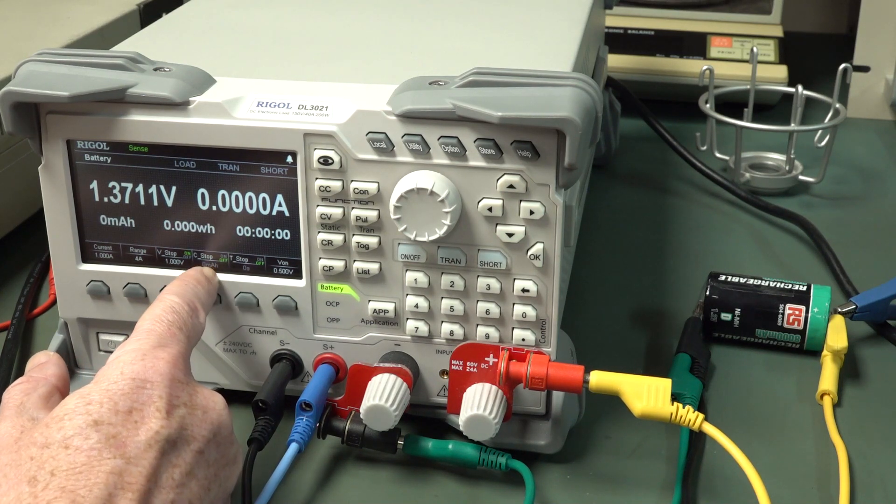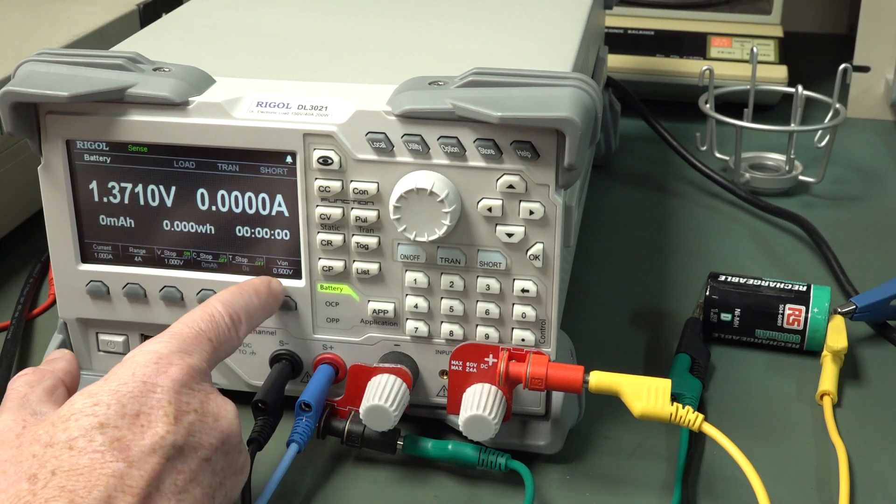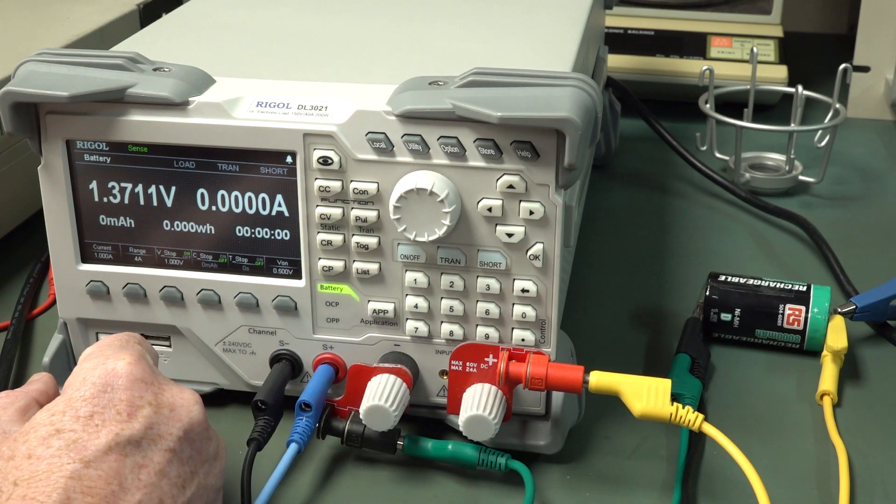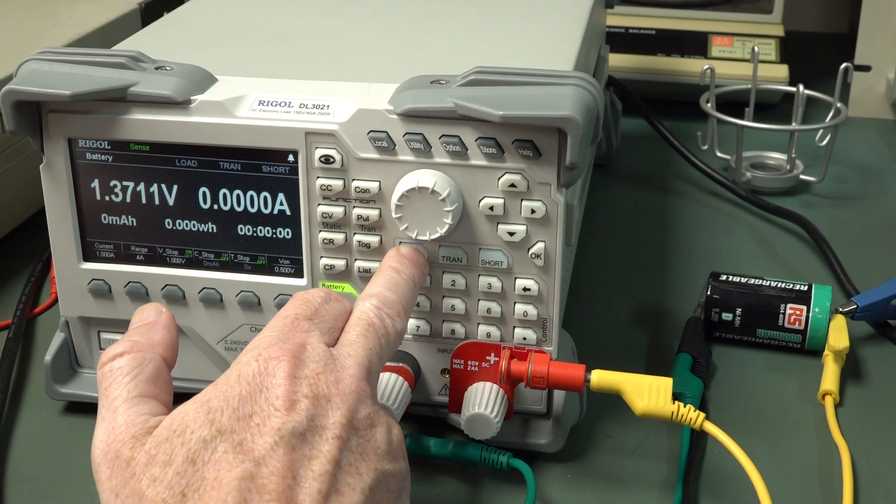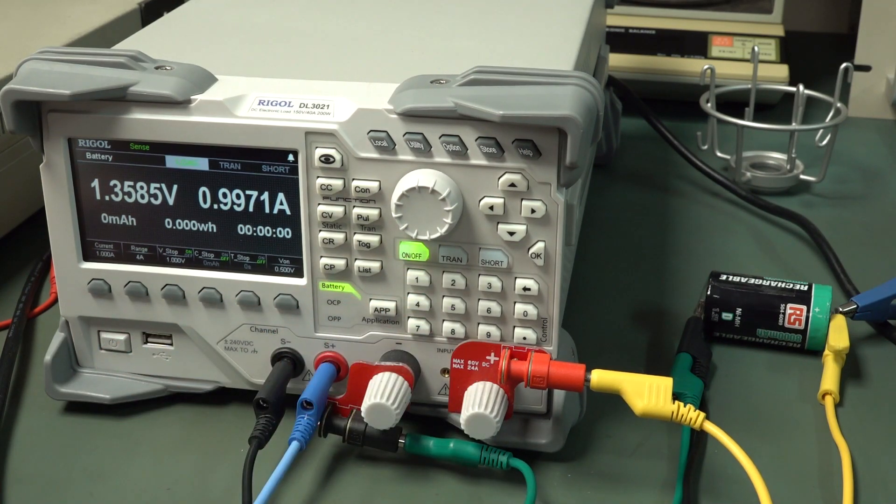We've disabled the stop because you can stop at a certain capacity or you can stop with a certain timer. Voltage on 0.5. Everything should be hunky-dory. Right. Off. And hopefully... Load.